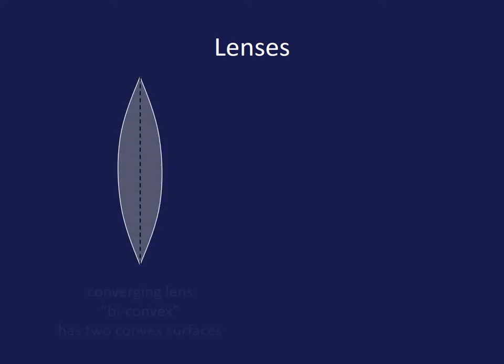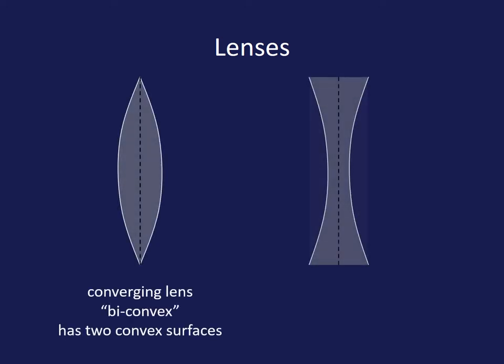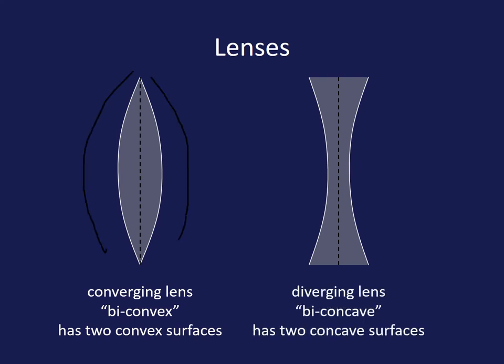In this video we're going to be looking at a couple of types of lenses. First type is a converging lens and the second type is a diverging lens. In terms of comparing them, the converging lens kind of bulges out while the diverging bulges inward.